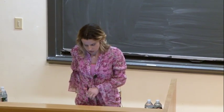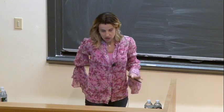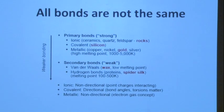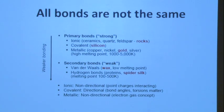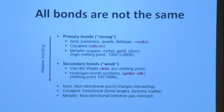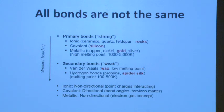The problem is that all bonds are not the same, and you have to be careful about the environment. Starting from something strong: you have ionic bonds in ceramics, covalent bonding, and metallic bonds — all primary bonds, very strong. Then you go to weaker bonds like hydrogen bonding in water or even DNA. Some are weak, some are strong, but depending on the question you're asking, you need to be able to describe all of them — van der Waals for wax or spider silk, hydrogen bonding for DNA.